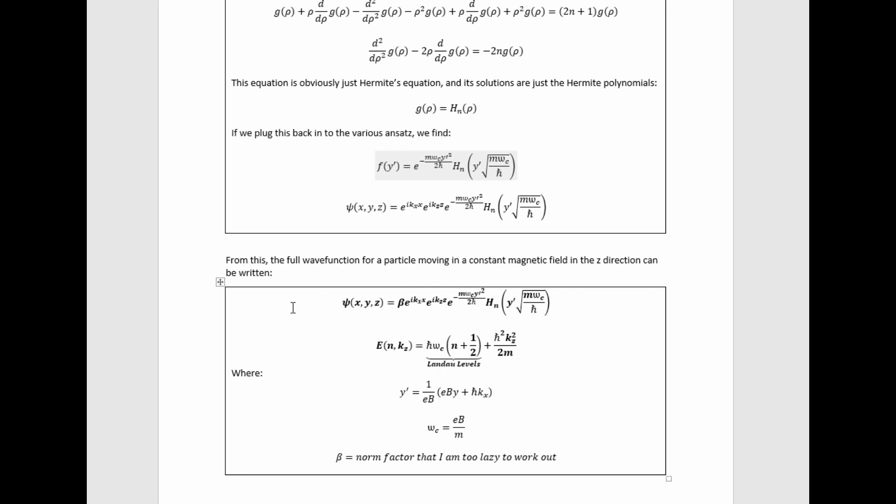So here we can just summarize the answer. This is the full wave function, where beta is just a normalization factor. Of course, the motion is unconstrained in one direction, so part of that normalization would be the nonsensical task of normalizing a plane wave. So you can't really get a nice normalized solution for the whole problem here. It doesn't really work like that. And these are the energy eigenvalues we formed, where, to make it clear, I've written the definitions of the various substitutions we made that I have left in this summary of the solution. So that's how you solve the Schrödinger equation for an electron in a constant magnetic field in the z direction.